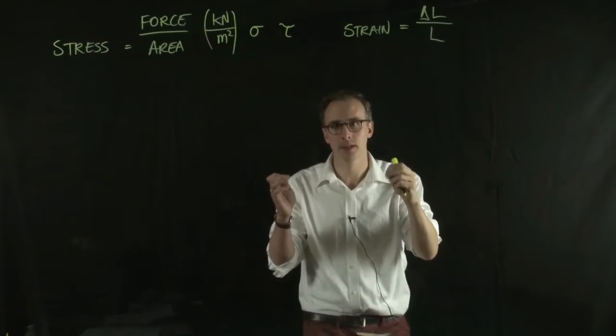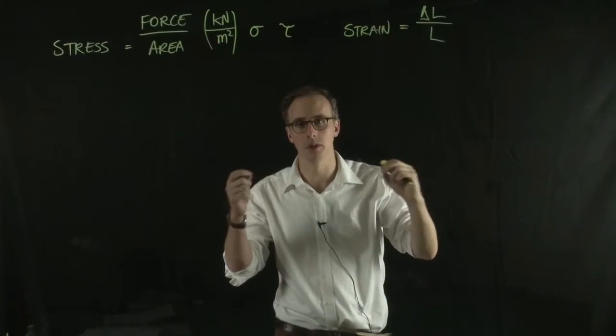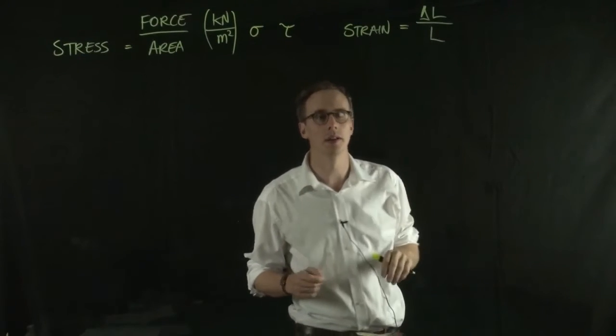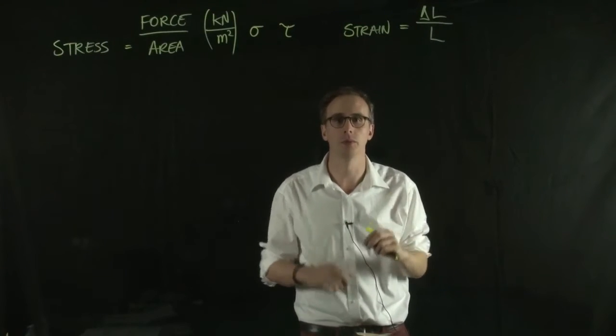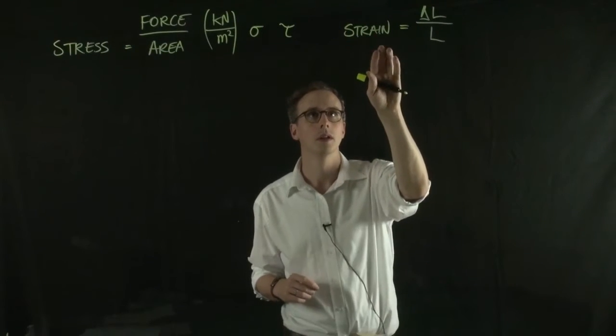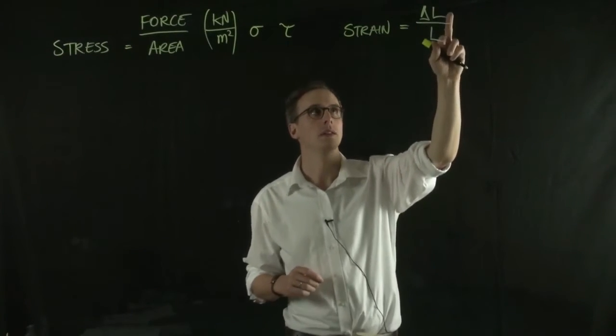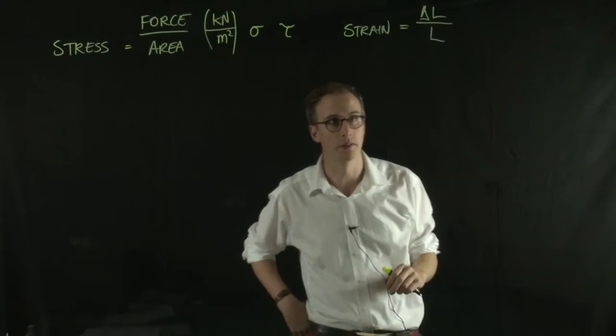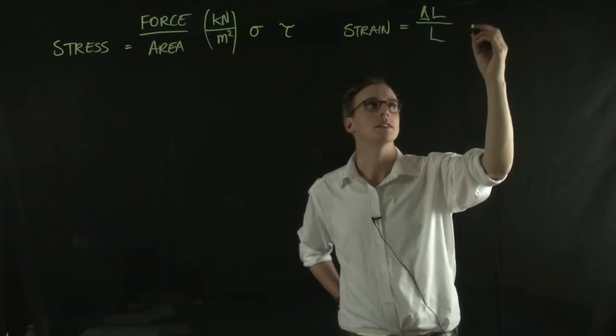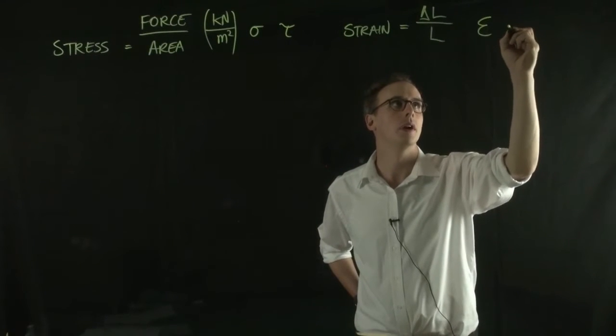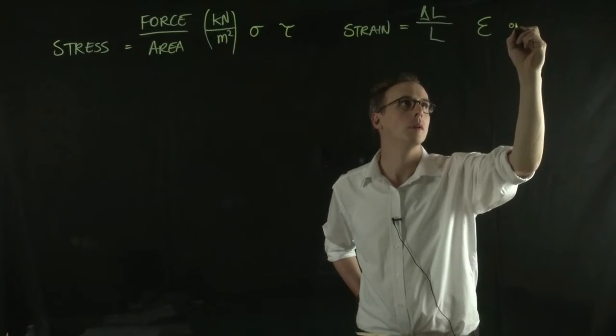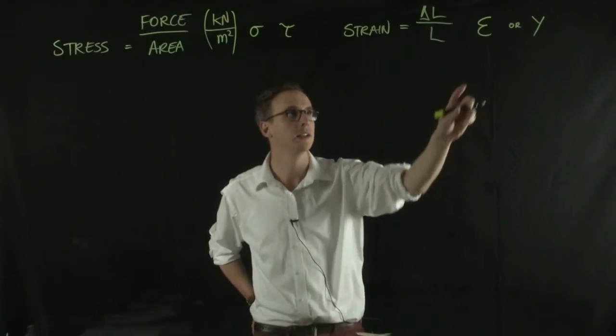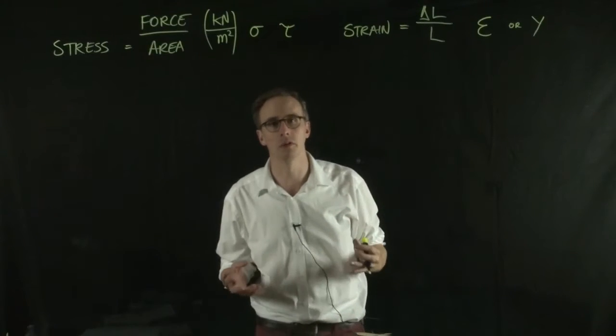If I had a spring and added stress to it, pulling it apart, the strain would be the change in length - how much I displaced it divided by its original length. That's given the symbol epsilon or gamma. Gamma for shear strain, and epsilon for volumetric strain.